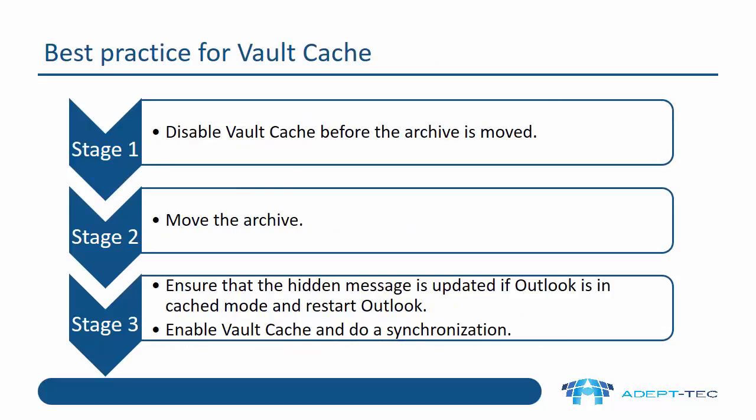If you're using vault cache, there is best practice guidance for handling those users. It's recommended to disable vault cache before the archive is moved, then move the archive. Once it's moved, ensure that the hidden message is updated if Outlook is in cache mode and restart Outlook. Then you can enable vault cache and do a synchronization.